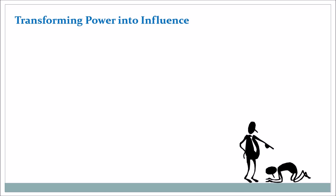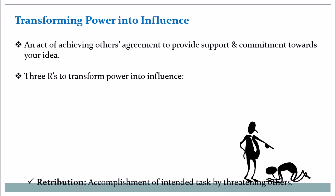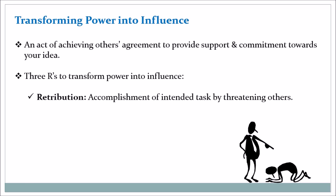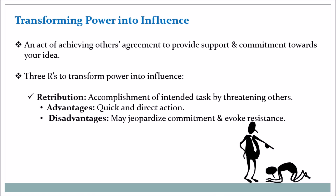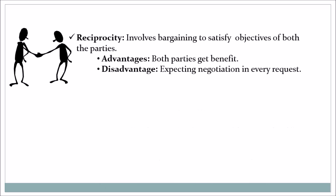Transforming power into influence is an act of achieving others' agreement to provide support and commitment toward your idea. Three R's to transform power into influence are: Retribution — accomplishment of intended tasks by threatening others; advantages include quick and direct action, but disadvantages are it may jeopardize commitment and evoke resistance. Reciprocity — involves bargaining to satisfy objectives of both parties; advantages are that both parties benefit, but the disadvantage is expecting negotiation in every request.